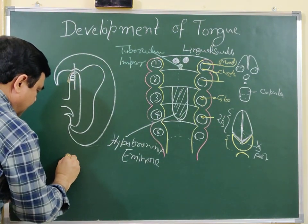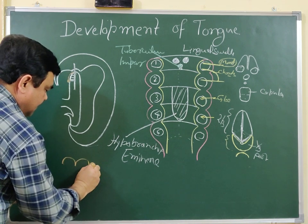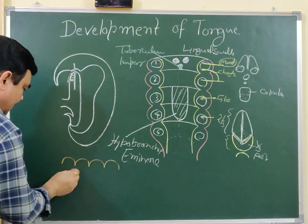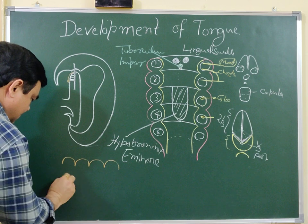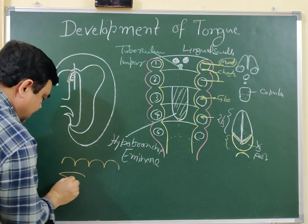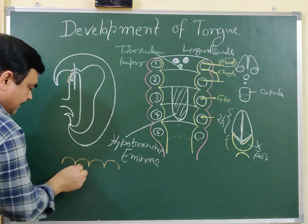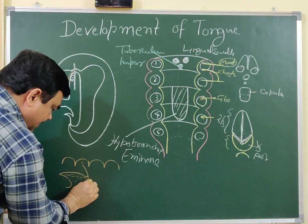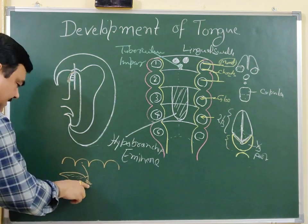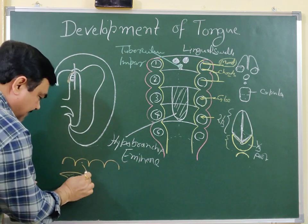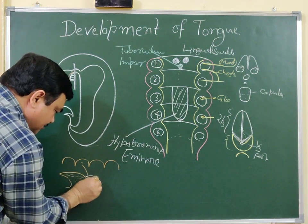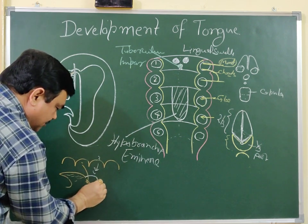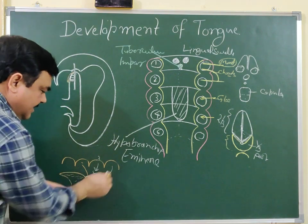In the sagittal view: the first arch is anterior, going anteriorly. The second arch is buried deep in the substance of the tongue. The posterior one-third part is from the third arch, and the posterior-most part — the epiglottis — is from the fourth arch. The foramen cecum is located here.